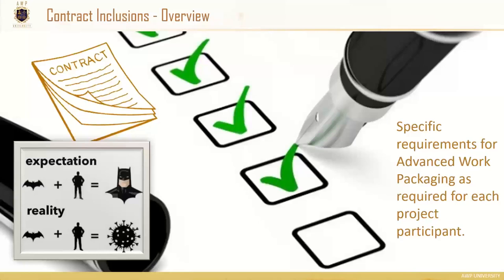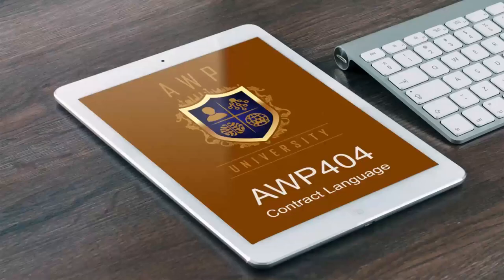When I say requirements, I mean not just the planning activities, but also data requirements. Through the technology discussions yesterday, there were great discussions about data requirements and how data needs to be transferred. The new data requirements developed within CII are literally just about a contract inclusion in themselves. Make sure your contracts are not just written from a 'thou shalt' point of view, but specify how you need to deliver information. AWP 404 within the university is a great course on contract language.